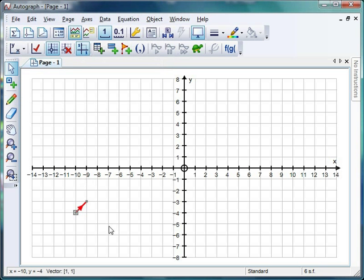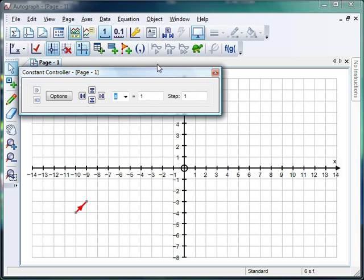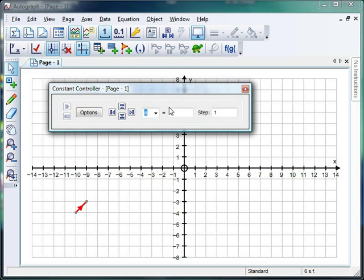Now, Autograph defaults any constant values to be 1 initially, so when I click OK, I'm going to get a 1-1 vector, which is there. But now the beauty of this is I can use a constant controller to change these vectors. At the moment, the value of A is 1, but I can nicely increase the value of A and have a look at what happens there. And likewise, I can increase the value of B and have a look at what happens there. So that's quite a nice dynamic way of controlling your vectors.